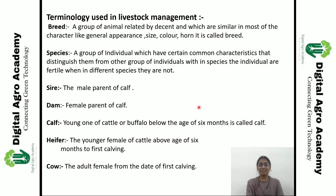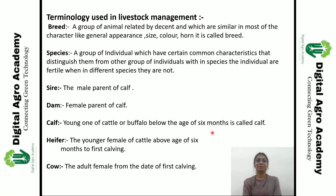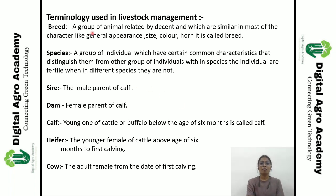Now there are various terminologies we are going to discuss. First is 'breed' — a group of animals related by descent which are similar in most characters like general appearance, size, color, horns, etc. Next is 'species' — a group of individuals which have certain common characteristics that distinguish them from other groups of individuals.